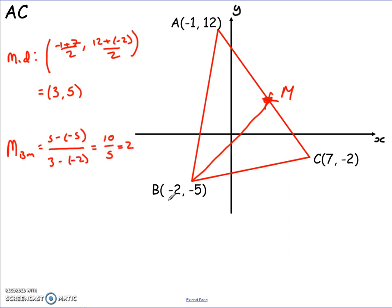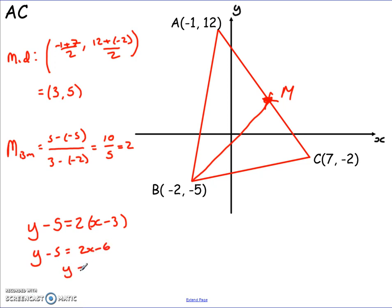I can use either of these two points to get the equation of the line — pick the one easiest for you. I'll pick point M, so: y minus 5 equals 2 bracket x minus 3. Multiplying out and simplifying: y minus 5 equals 2x minus 6, so y equals 2x minus 1. That's the equation of the median of AC.